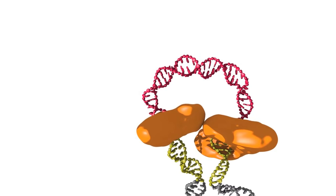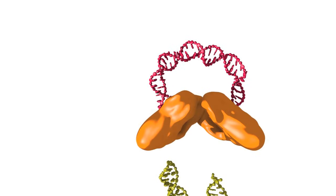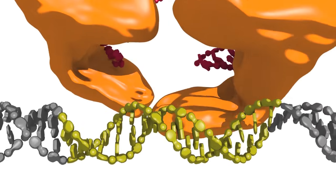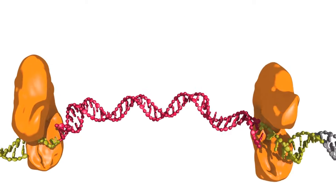The transposase then excises the element by generating double-strand breaks in the DNA at each end of the element. The transposase then directly joins the transposon ends to the target site in the target DNA.